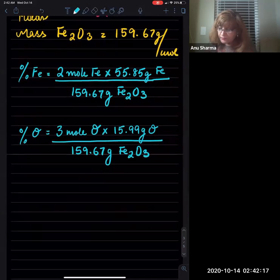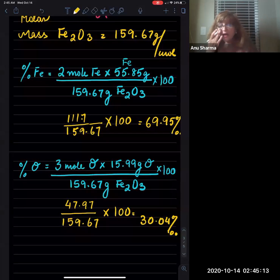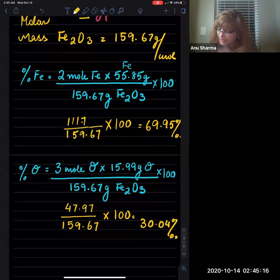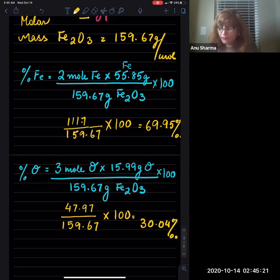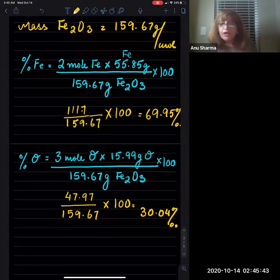Now when you do the math, we see that when we take the two moles of iron and multiply by 55.85 grams of iron, which is the molar mass from the periodic table, divided by 159.67 times 100, we get 69.95. And here, the three moles of oxygen times the molar mass of oxygen divided by the molar mass of Fe₂O₃ times 100, we get 30.4%.